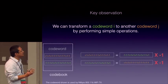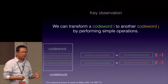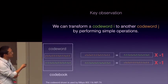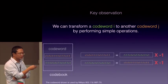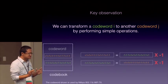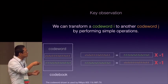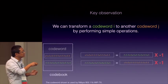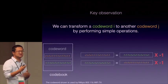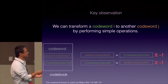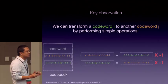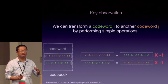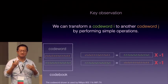Another key observation is that we can transform one codeword into another codeword within the same codebook. The orange and green codewords are actually similar — you can convert the green codeword to the orange codeword by multiplying by minus one, and vice versa. That's the key observation: codewords within a codebook can be transformed from one to another by performing simple operations.